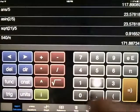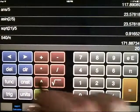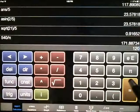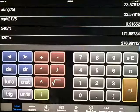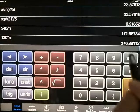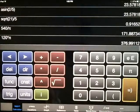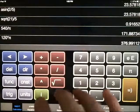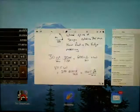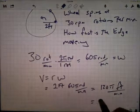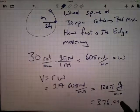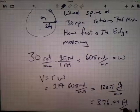So what's 120 times pi? Let me grab my calculator here and say 120 times pi, and that's 377 point, 376.99 whatever, feet per minute.